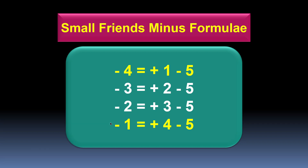Let's see how the friends are involved in these formulae. As you can see, the small friend of 4 is 1. In the first formula, you can see 4 as well as 1 in the same formula. In the next formula, minus 3 equals plus 2 minus 5 — the friends are 3 and 2. And in the third formula, minus 2 equals plus 3 minus 5 — 2 and 3 are the small friends.